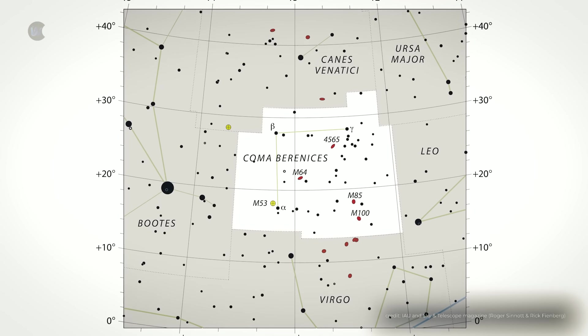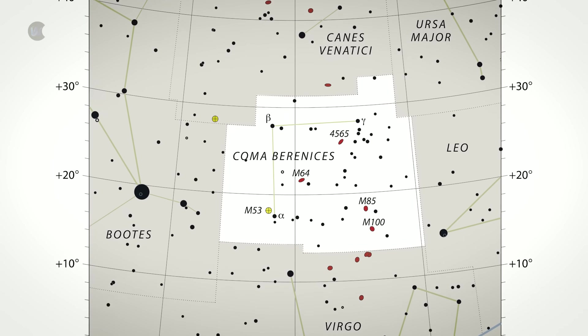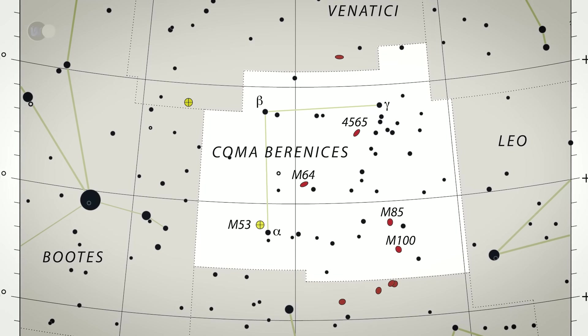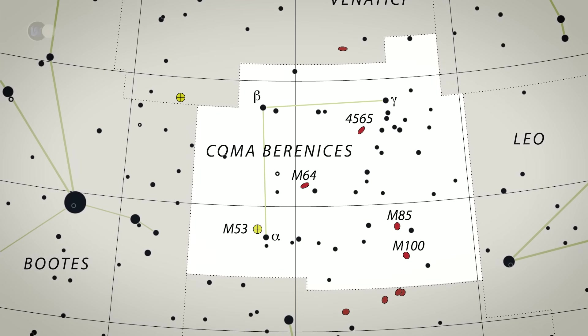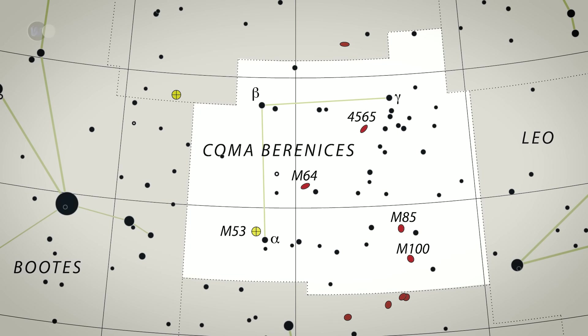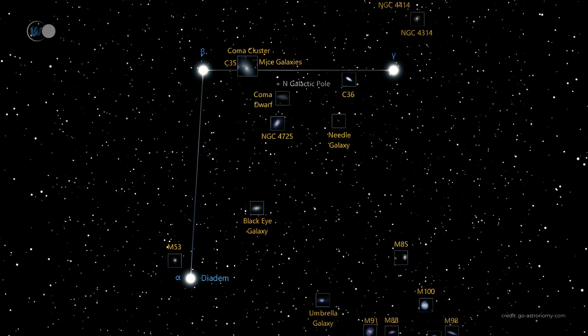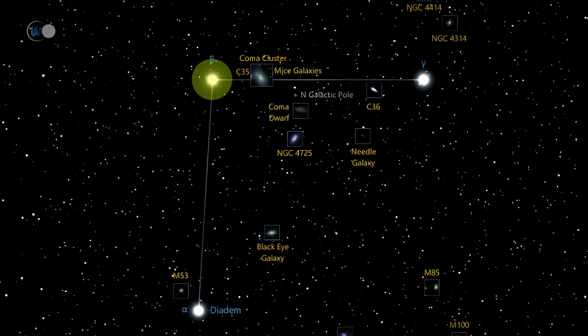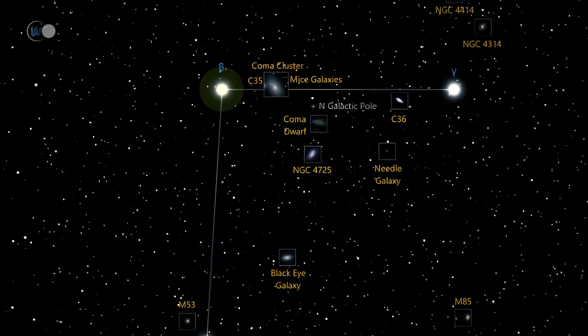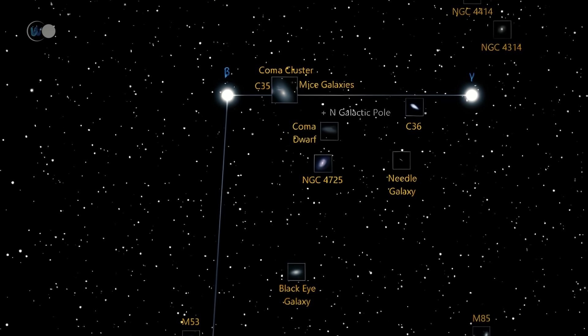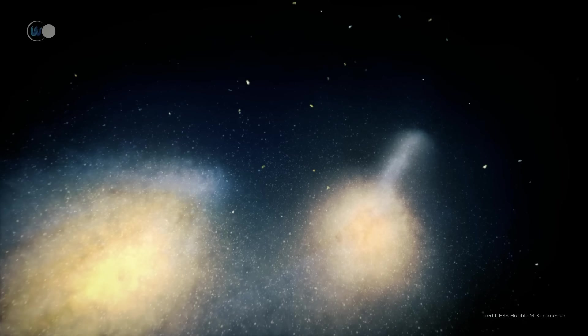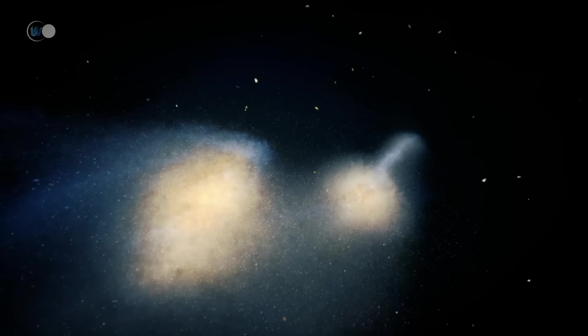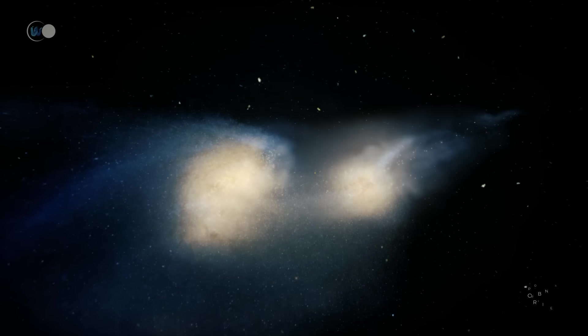The constellation Bernice's hair lies between Leo and Bouvier. With declinations between plus 13 degrees and plus 33 degrees, it can be seen from almost anywhere on planet Earth. Its brightest star is beta, with a magnitude of 4.3. The Bernice's hair constellation is rich in galaxies and other telescopic objects. It also features a pair of galaxies in the throes of cannibalism. This is the mouse galaxy.